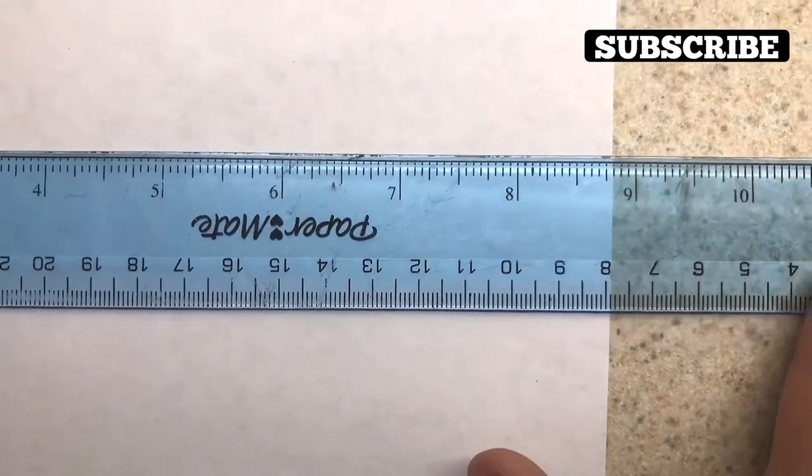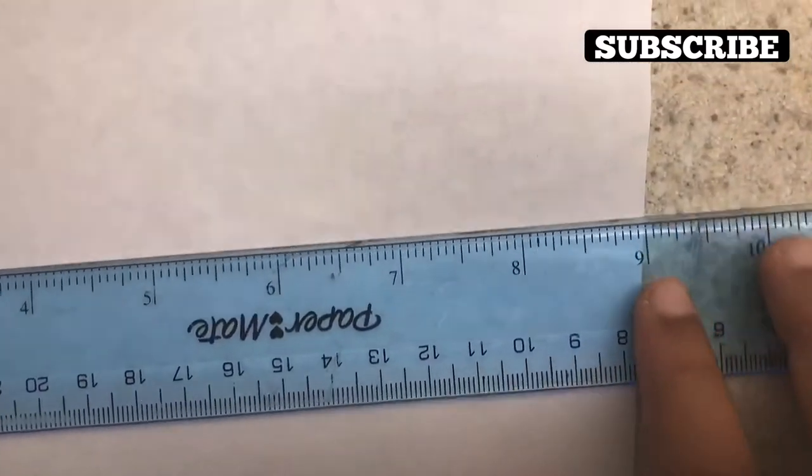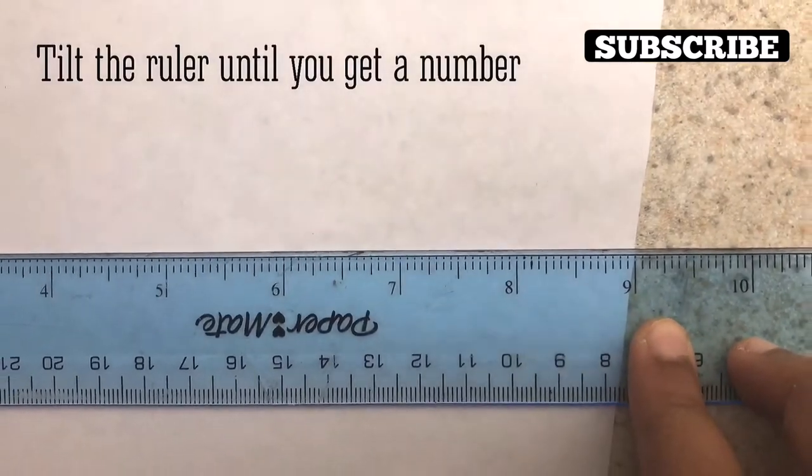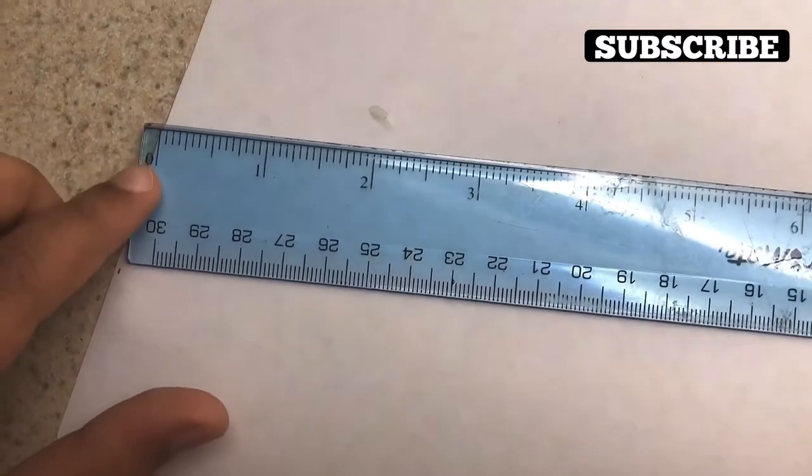Start off by tilting the ruler and lining up the 9 inch mark with the edge of the paper, and so does the zero mark too.